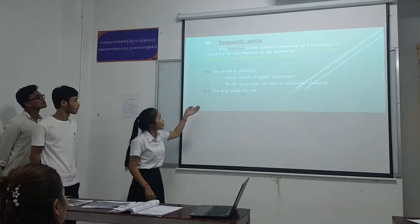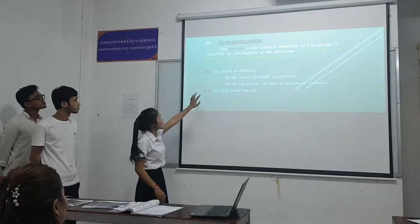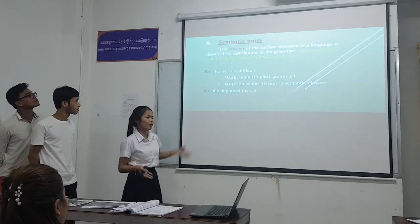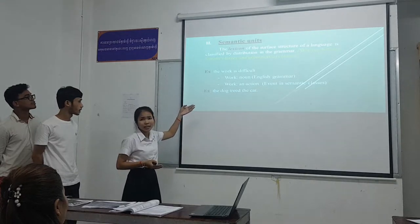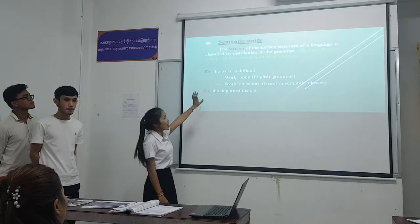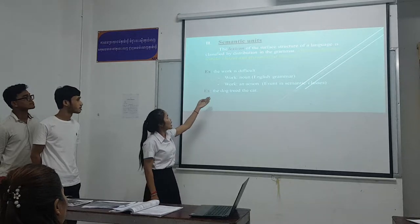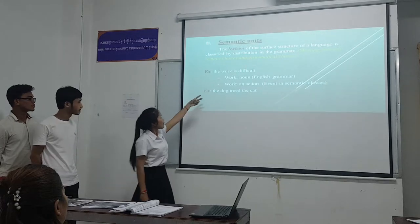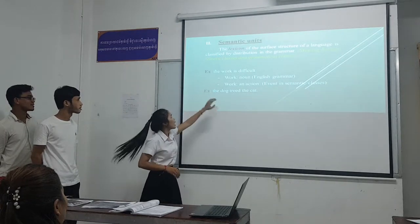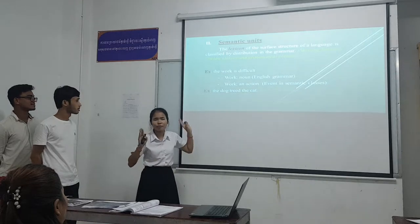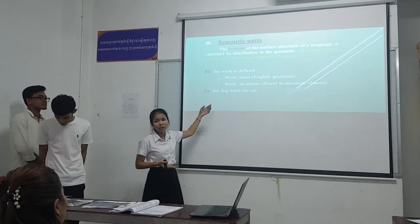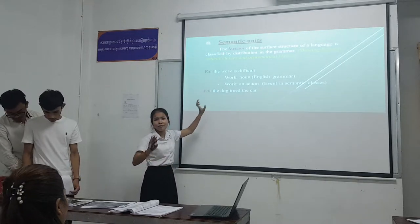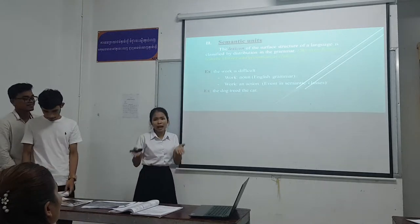For example, the verb is difficult. A verb normally functions as a verb because it is an action, but in English grammar it can function as a noun. However, in the semantic class it is still talking about action — it is normally used as a verb. So this is called skewing, because it changes direction. Normally it's a verb, but now used as a noun — that is called skewing.